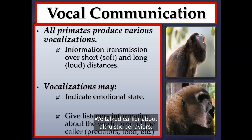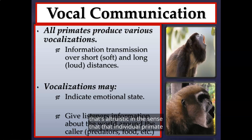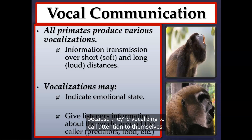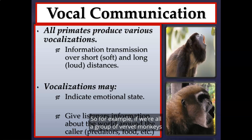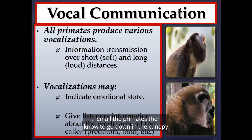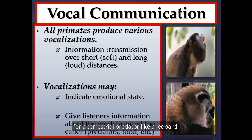Vocalizations can be very altruistic — if a primate vocalizes to alert the group to a predator, that individual is potentially putting themselves in danger by calling attention to themselves. For example, among vervet monkeys, the alarm call for an aerial predator like a hawk or eagle signals all primates to go down in the canopy. The alarm call for a terrestrial predator like a leopard signals them to move up in the canopy to avoid it.